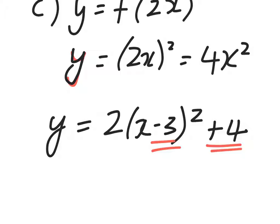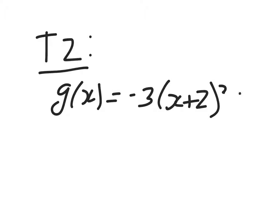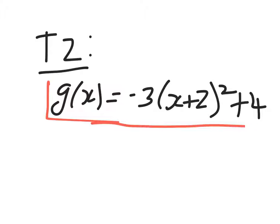On to task 2. So again, we're looking at the parent quadratic function f of x equals x squared. And if we transform this parent function according to the equation minus 3f of x plus 2 plus 4, that's going to give you g of x equals minus 3 times x plus 2 squared plus 4. So use the equation to write it in vertex form — that's what we have there. We've changed g of x into vertex form.